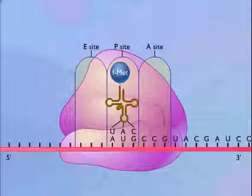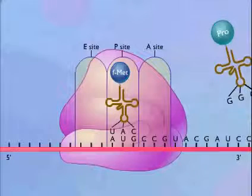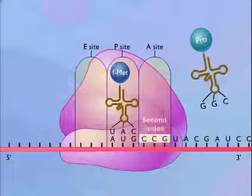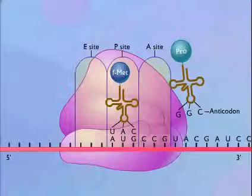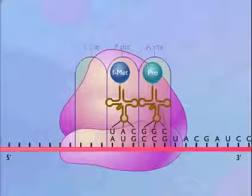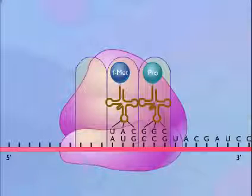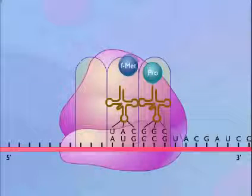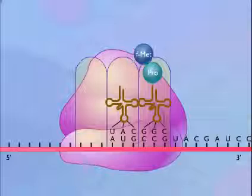The initiating transfer RNA carrying formyl methionine binds to the P-site. A transfer RNA that recognizes the next codon and carries the second amino acid then moves into the A-site. The formyl methionine carried by the transfer RNA in the P-site is then joined to the amino acid carried by the transfer RNA that just entered the A-site by a peptide bond.